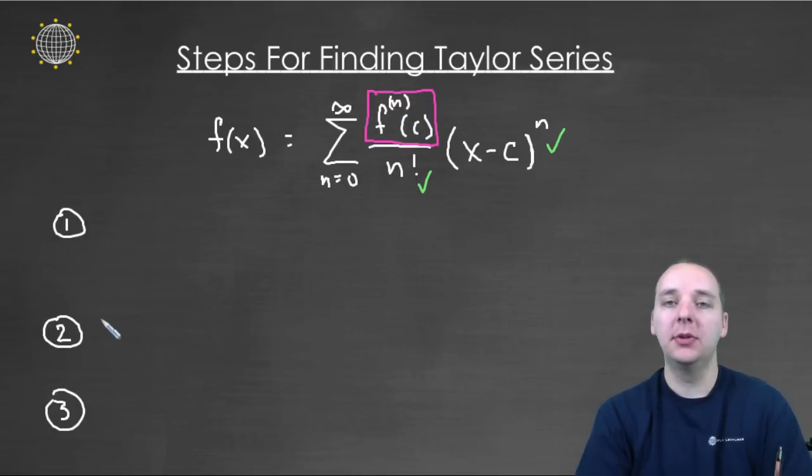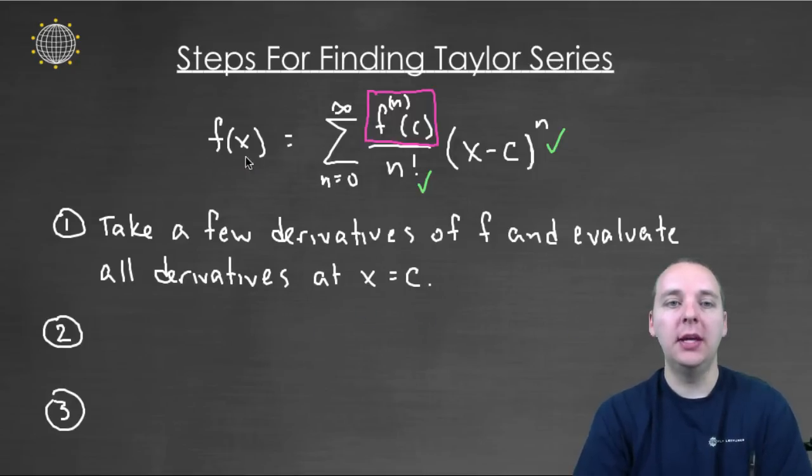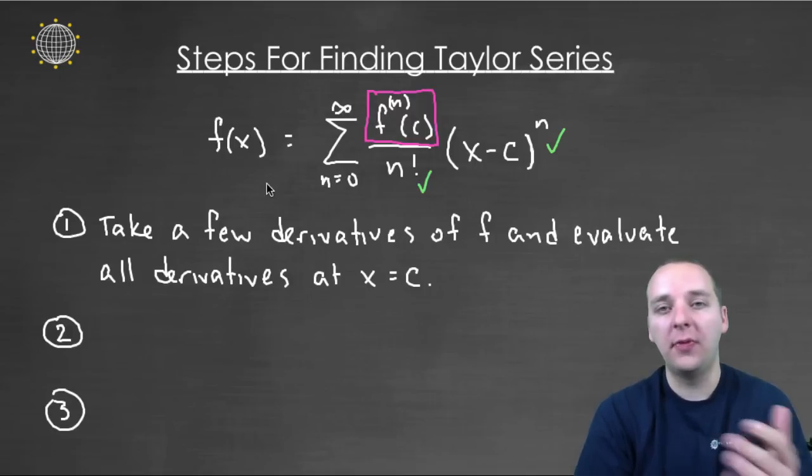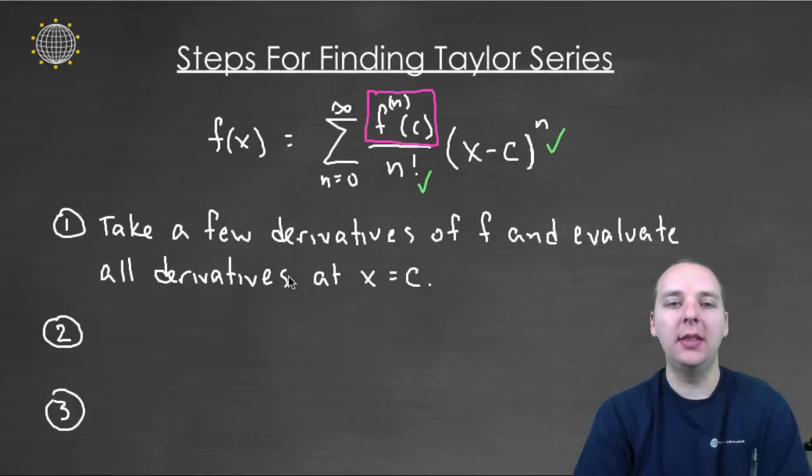So here I've got three steps I'm going to share with you that will explain how you find a Taylor series representation of a function like f of x. Alright, so the first thing we do is we actually take our function and we, by hand, take just a few derivatives. Not 100 derivatives, but you know maybe 5, you know 4, 5, 6, something like that. Take a few derivatives of the function, list them out on some scratch paper, and evaluate them at c, right?